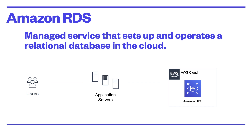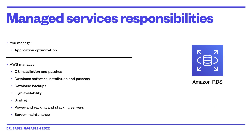Amazon RDS is a managed service that sets up and operates a relational database in the cloud. You manage the application optimization, and AWS manages the OS installation and patches, database software installation and patches, database backup, high availability, scaling, and server maintenance including power, racking, and stacking.